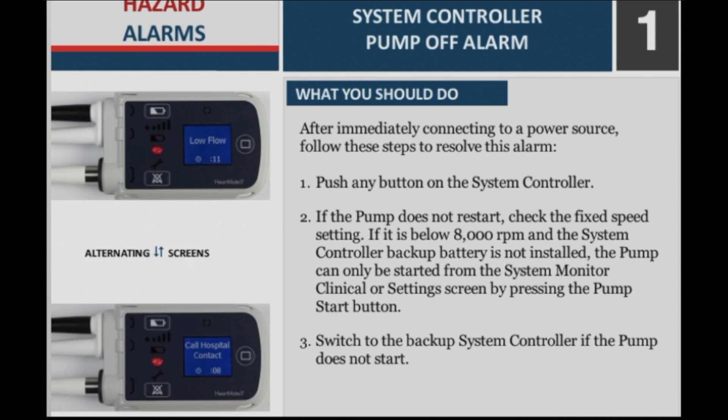Step 1: Push any button on the system controller. Step 2: If the pump does not restart, check the fixed speed setting. If it is below 8000 RPM and the system controller backup battery is not installed, the pump can only be started from the system monitor clinical or settings screen by pressing the pump start button. Step 3: Switch to the backup system controller if the pump does not start.